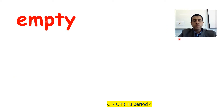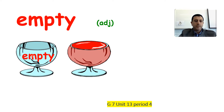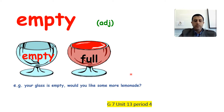The third word is 'empty.' Empty is an adjective. Look at those pictures — the first one is empty, it has nothing. But the other one is full. An empty glass doesn't have anything in it, while the other is full of juice. An example: Your glass is empty. Would you like some more lemonade?